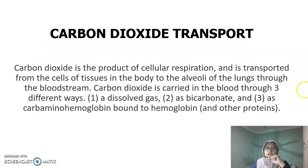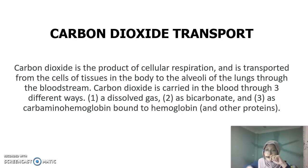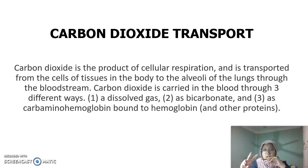For carbon dioxide transport: carbon dioxide is the product of cellular respiration and is transported from the cells of body tissues to the alveoli of the lungs through the bloodstream. Carbon dioxide is carried in the blood through three ways: first, as dissolved gas; second, as bicarbonate ions; and third, as carbaminohemoglobin.